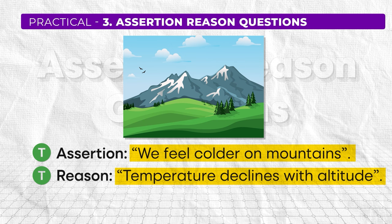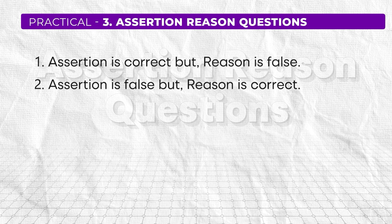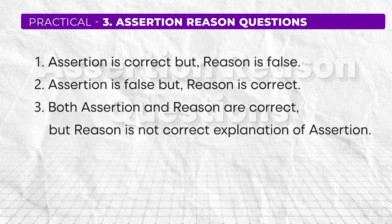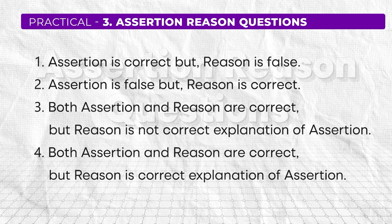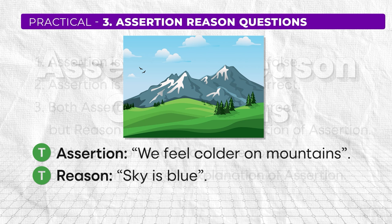In these questions you will get options like: assertion is true but reason is false; assertion is false but reason is true; both assertion and reason are true but reason is not a correct explanation of assertion; or both are true and reason is a correct explanation of assertion. In our example, both assertion and reason are true, and the reason is a correct explanation of the assertion. However, if the reason were 'the sky is blue,' then both statements might be true but the reason would not explain the assertion — so you'd choose that both are true but reason is not a correct explanation.